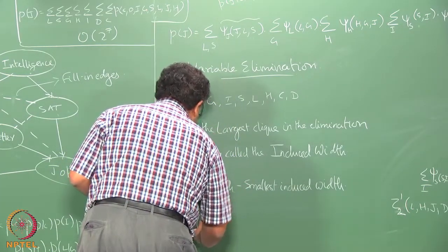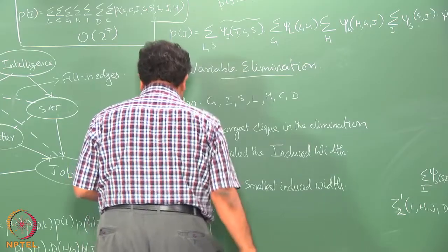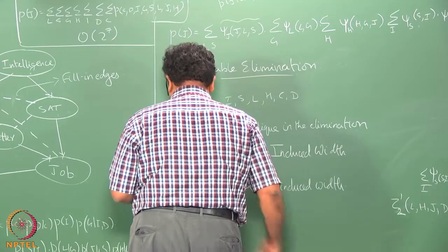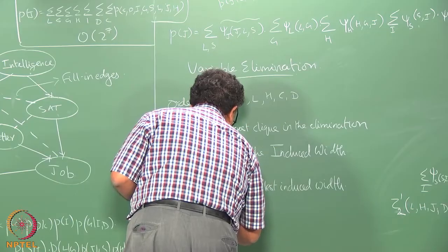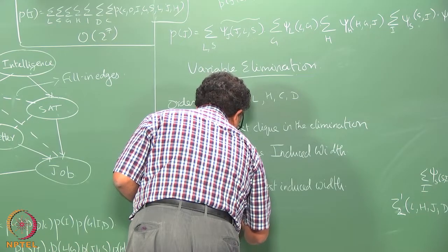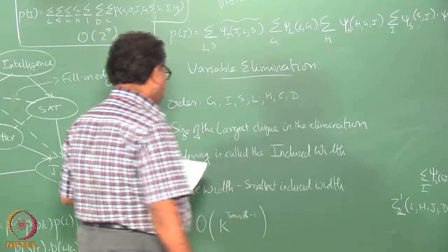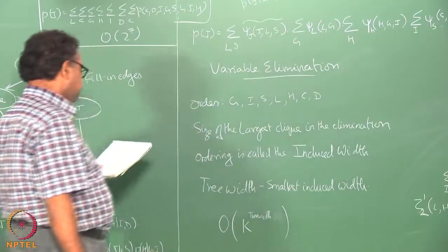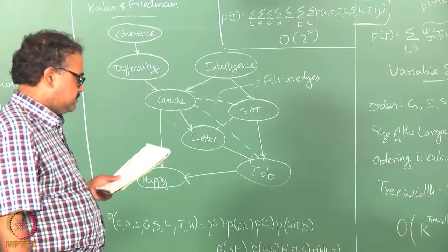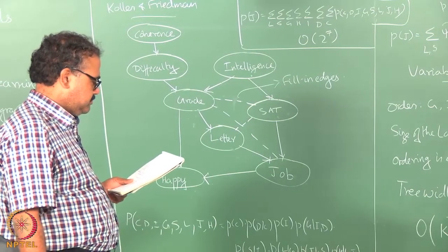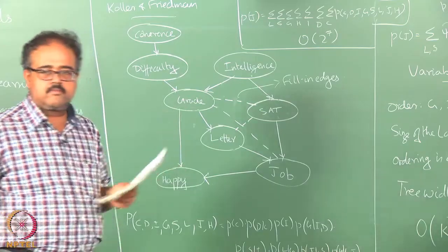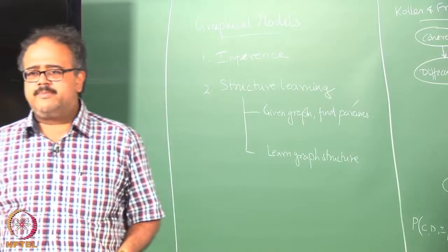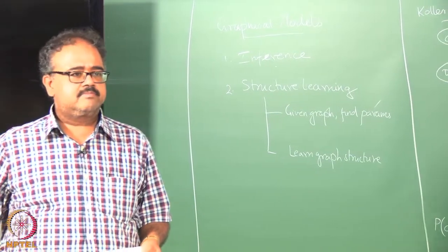The complexity of doing variable elimination is actually on the order of k to the power of tree width, where k is the number of values for each random variable. So in this case, assuming k is 2, it will be order of 2 to the power of tree width.